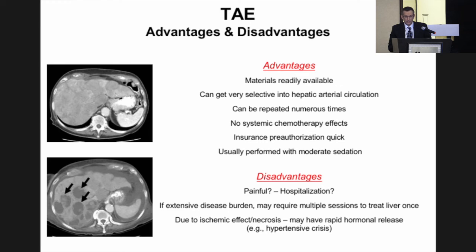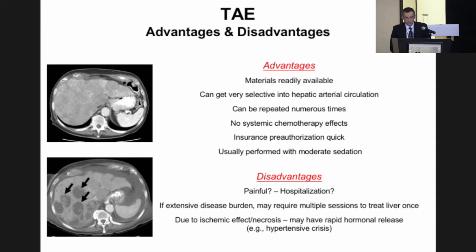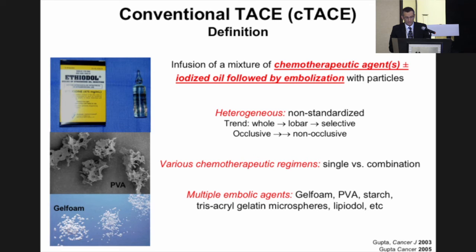The advantages of arterial embolization are that materials are readily available, all IR physicians know how to use them, it can be repeated numerous times, there are no systemic chemotherapy effects, insurance pre-authorization is quick, and it's usually performed with moderate sedation. However, because you're inducing ischemia these procedures can be quite painful, patients are often admitted, and in carcinoid and other neuroendocrine tumors you can get a massive hormonal release, so hospitalization is advised.